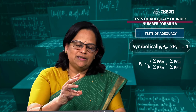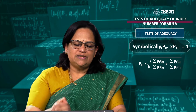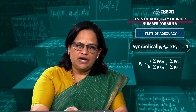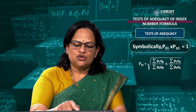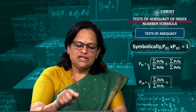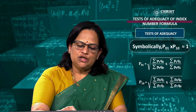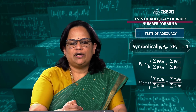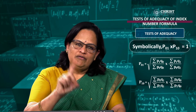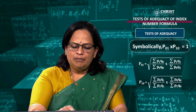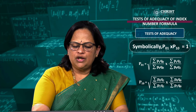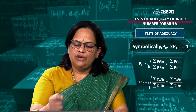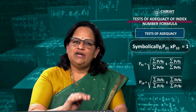Now we reverse: 2020 becomes the current year and 2021 becomes the base year. Wherever we get subscript 1 (current year), we change it to 0, and wherever we get subscript 0 (base year), we change it to 1. So P10 becomes the square root of (σP0Q1/σP1Q1) × (σP0Q0/σP1Q0).